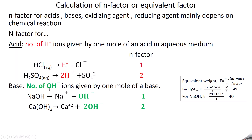For a base, the number of OH⁻ ions or acidity given by one mole of the base gives the N factor. Sodium hydroxide decomposes to give Na⁺ and OH⁻ — only one OH⁻, so N factor is 1. Calcium hydroxide Ca(OH)₂ gives Ca²⁺ plus 2OH⁻, so its N factor is 2.